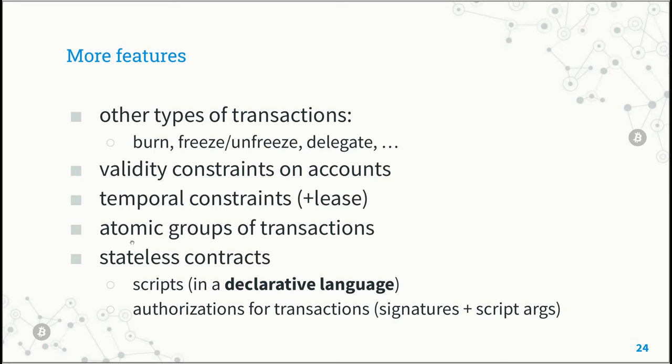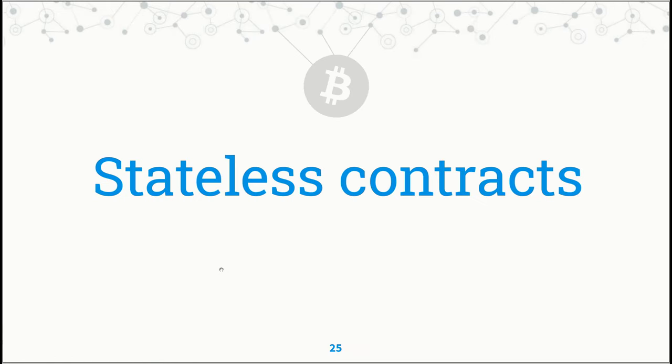Besides these transaction types, our formal model encompasses all the transaction types implemented by Algorand — for instance, tools to burn assets, to freeze or unfreeze assets, to delegate the management of assets to third parties, and so on. The model features all the validity constraints on accounts and temporal constraints about when a transaction can be appended, including the lease functionality. The model also includes atomic groups of transactions and stateless contracts. Rather than modeling contracts as scripts in a bytecode language like TEAL, in our model we describe contracts in a simple declarative language, so they are easier to read. The model includes authorizations in the form of signatures or witnesses for the scripts.